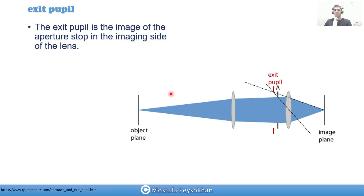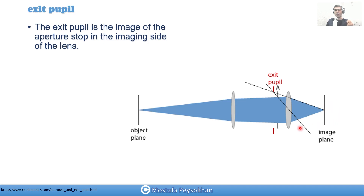Now we have another concept called the exit pupil. In any imaging system, we have an object plane and an image plane, and a physical stop that can be in front of the lens, in the middle, or anywhere between lenses. The exit pupil of your optical system is the image of that stop projected onto your image side — the right-hand side of your optical system.